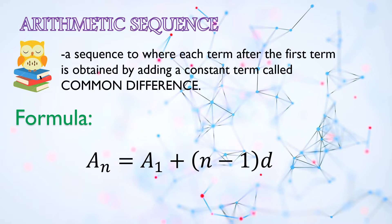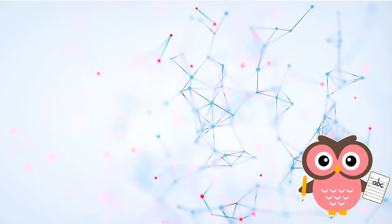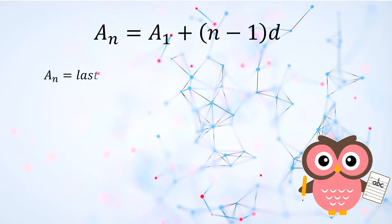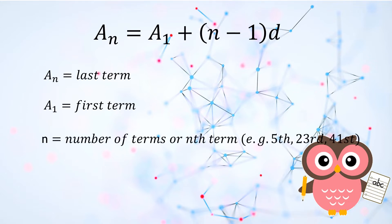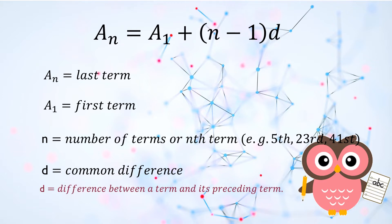What does this representation mean? From this formula, a sub n means the last term. A sub 1 means the first term. N represents the number of terms or the nth term — such as the 23rd or 41st. And d is what we call the common difference. The common difference is the difference between a term and its preceding term, or in algebraic form: d equals a sub n minus a sub n minus 1.